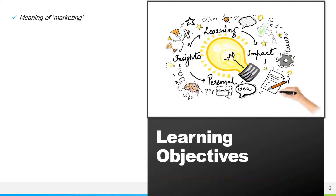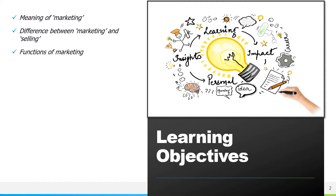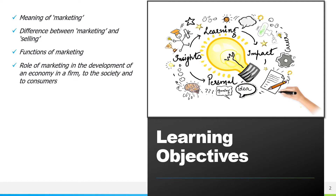Let's see what are the learning objectives under this chapter. We will be understanding the meaning of marketing, the difference between marketing and selling, and the functions of marketing. We will also cover the role of marketing in the development of an economy, in a firm, to a society, and of course to the consumers.